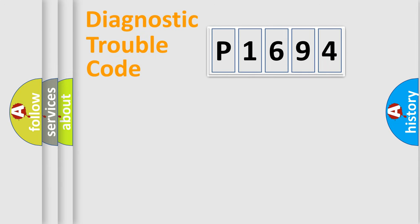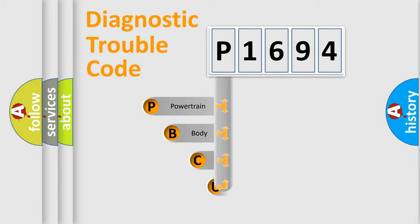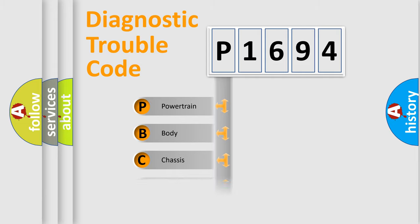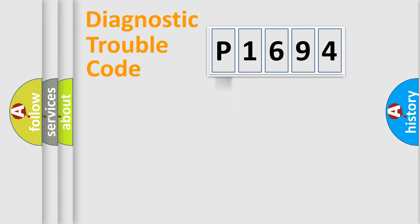Let's look at the history of diagnostic fault code composition according to the OBD2 protocol, which is unified for all automakers since 2000. We divide the electric system of automobile into four basic units: Powertrain, body, chassis, and network.